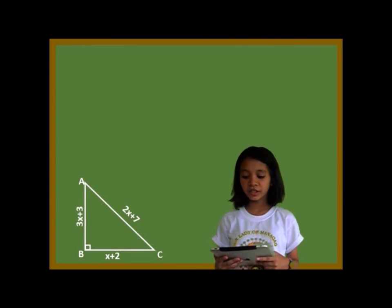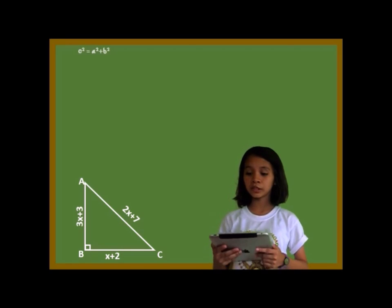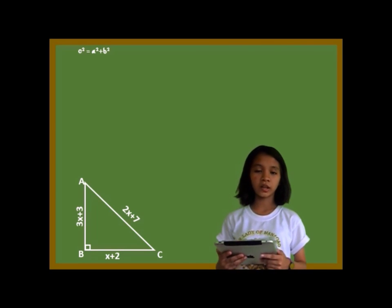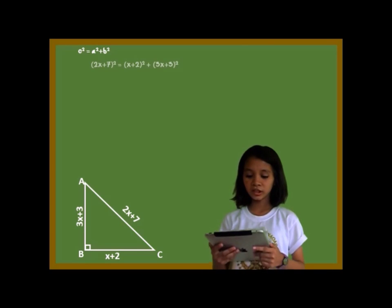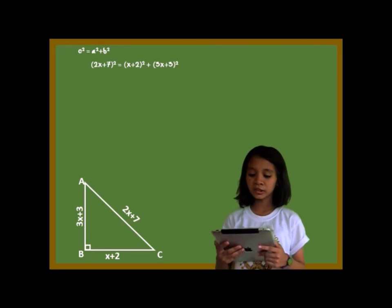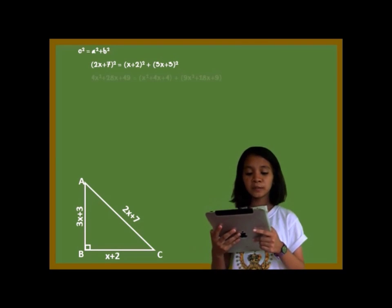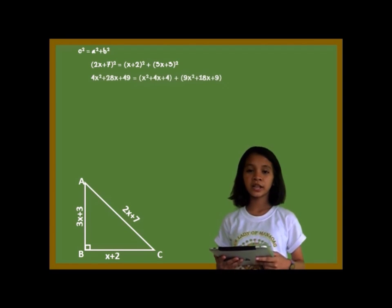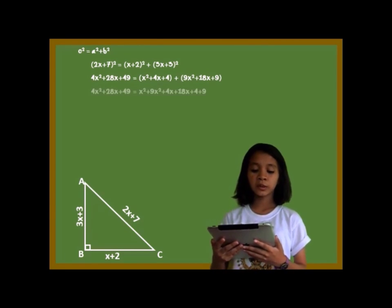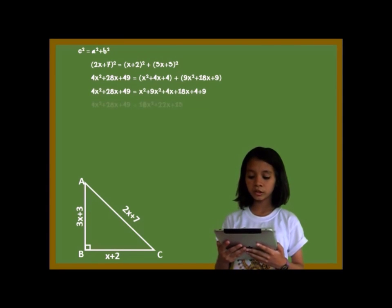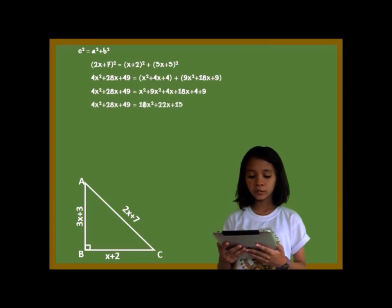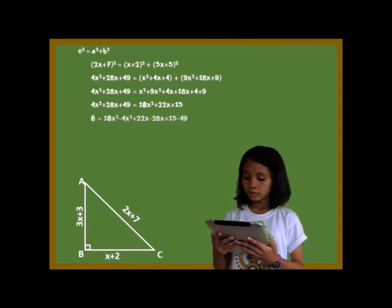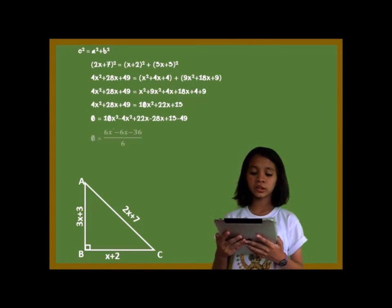In this problem, to find c, we will use the equation c squared is equal to a squared plus b squared. In this triangle, (2x + 7) is the hypotenuse and (3x + 3) and (x + 2) are the legs. So, (2x + 7) squared is equal to (x + 2) squared plus (3x + 3) squared. Expanding: 4x squared plus 28x plus 49 is equal to x squared plus 4x plus 4 plus 9x squared plus 18x plus 9. Then 4x squared plus 28x plus 49 is equal to 10x squared plus 22x plus 13. Setting to zero: 0 is equal to 10x squared minus 4x squared plus 22x minus 28x plus 13 minus 49. So 0 is equal to 6x squared minus 6x minus 36.